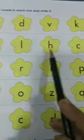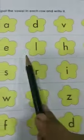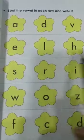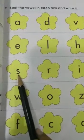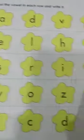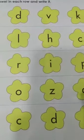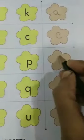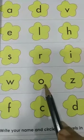Next one: E, L, H, C. Which is the vowel here? E. So you will write E here. Next: S, R, I, P. Which is the vowel here? I. You will write I here, okay?